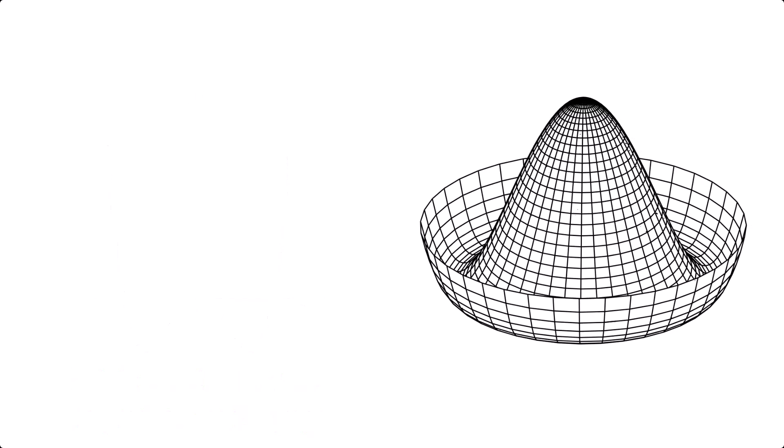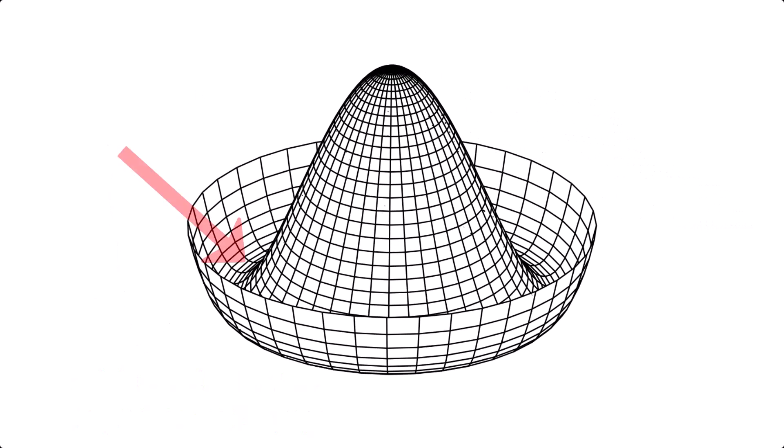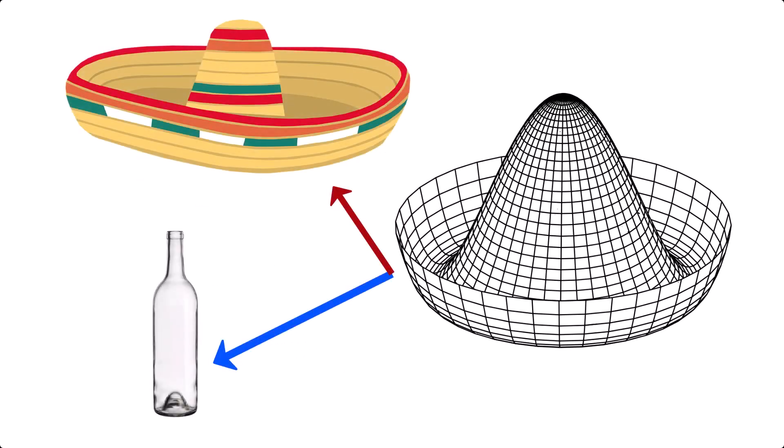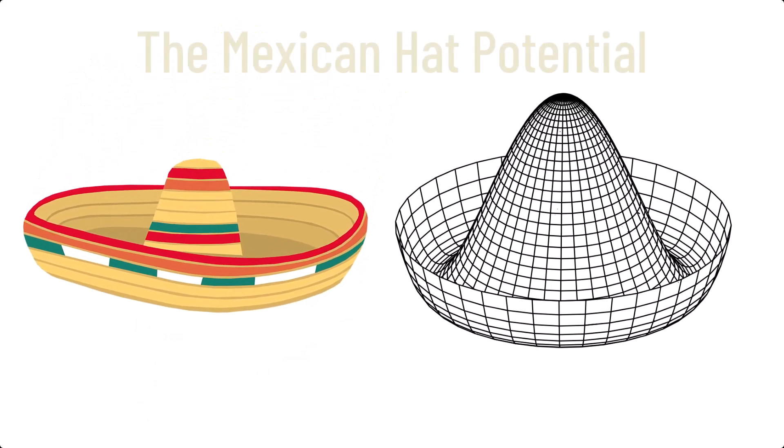Look at the shape of the 2D graph. It's now got a circular valley instead of 2 minima. This potential is shaped like the bottom of the inside of a wine bottle or a Mexican hat, and so is inventively named the Mexican hat potential. Think back to my initial question. This is what magnets and Mexican hats have in common.